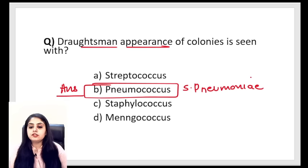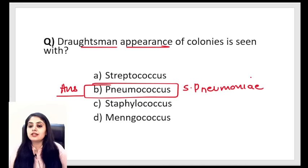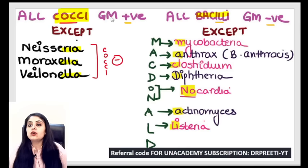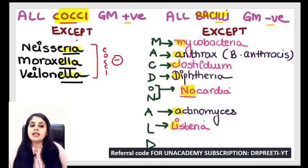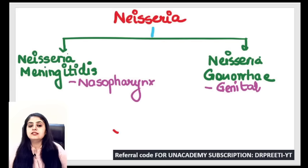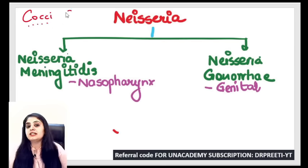Staph and Strepto seem done. Now let's take up one more set of organisms. Remember when we started — all cocci are gram positive except Neisseria, Moraxella, and Vellonella. Now I can finally come to Neisseria, the gram-negative cocci. We have two types: Neisseria meningitidis causing meningitis, and Neisseria gonorrhoeae causing gonorrhea and genital infections.